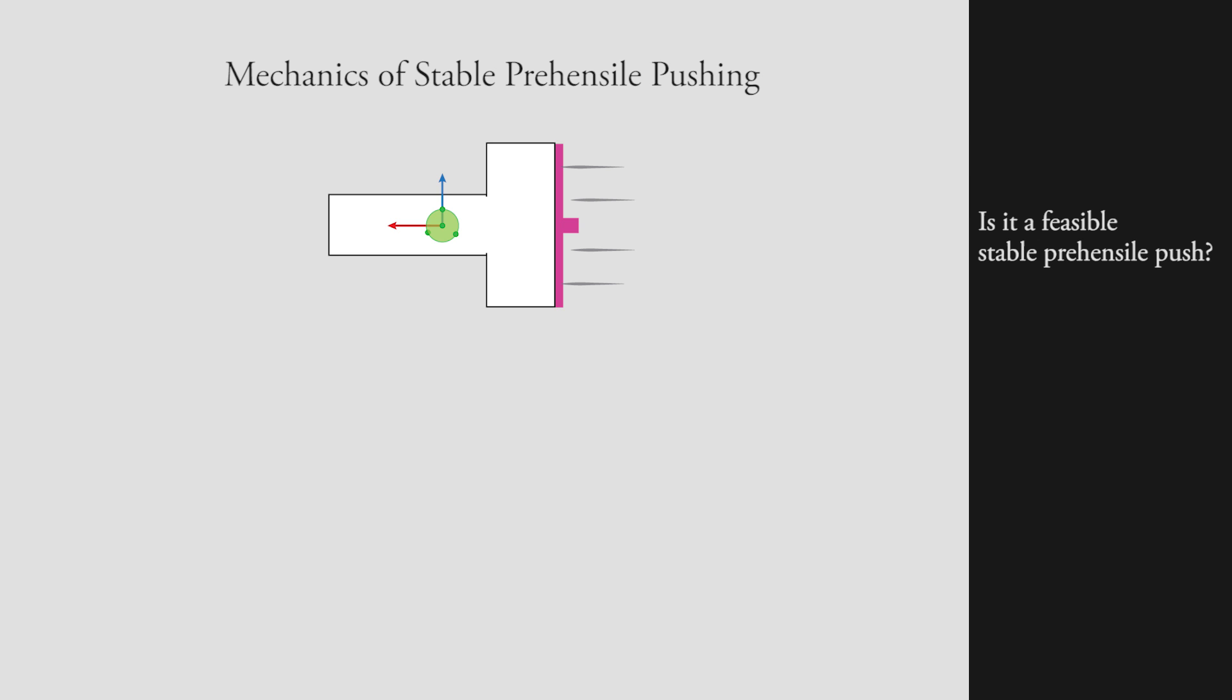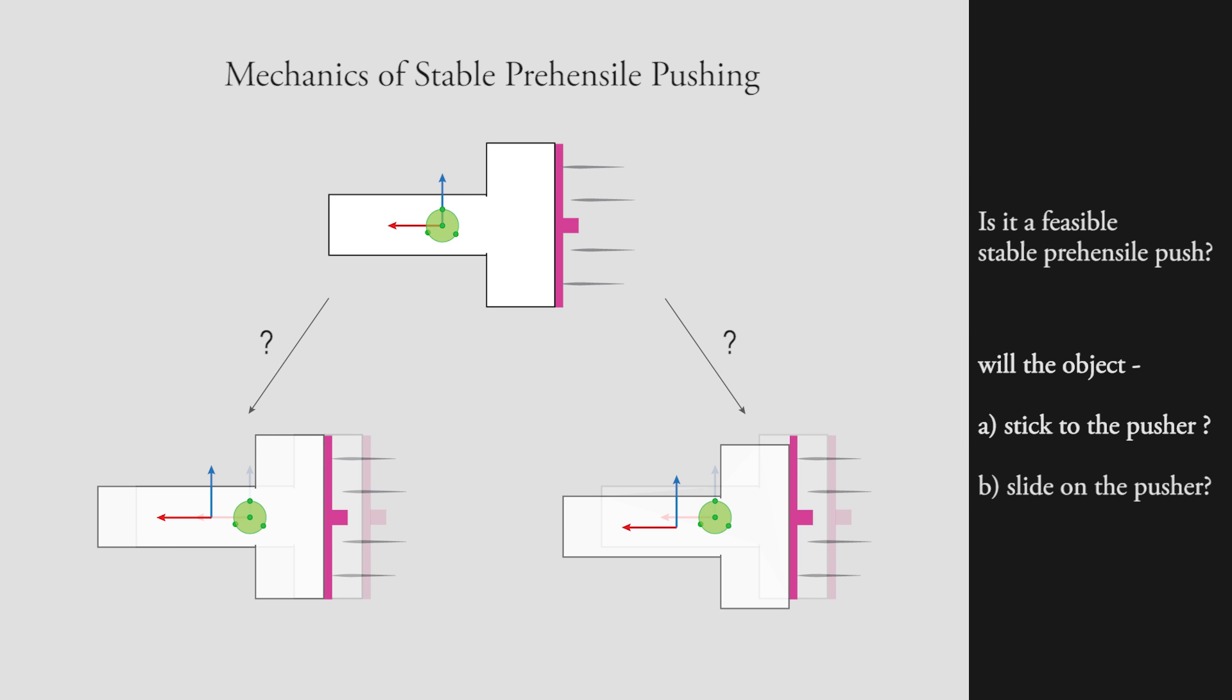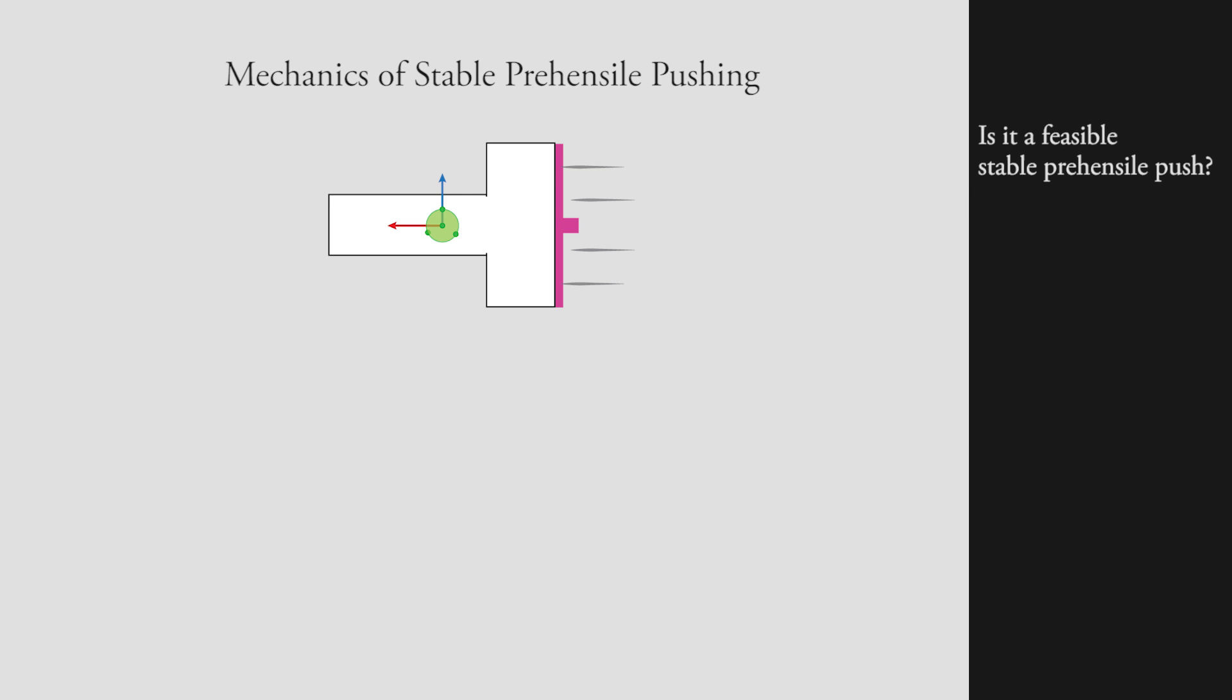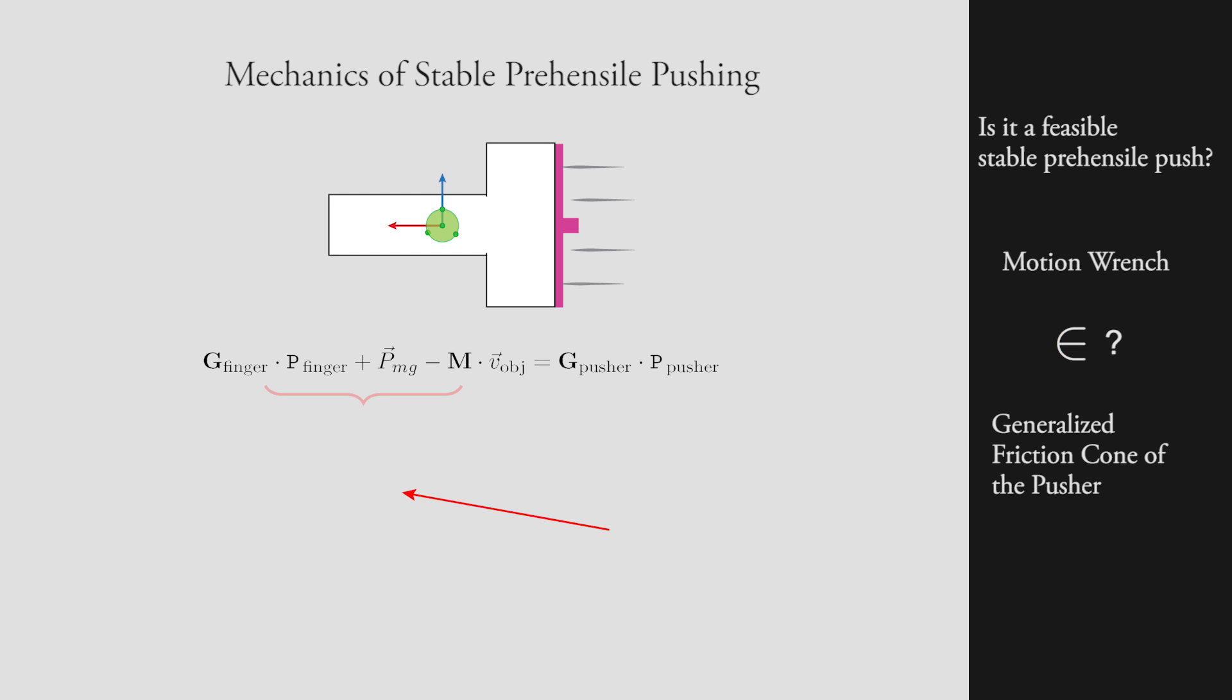It predicts if the object will stick to the pusher or will slide on it. The mechanics evaluation is a feasibility query. It checks if the wrench required for a desired push falls inside the generalized friction cone of the pusher.